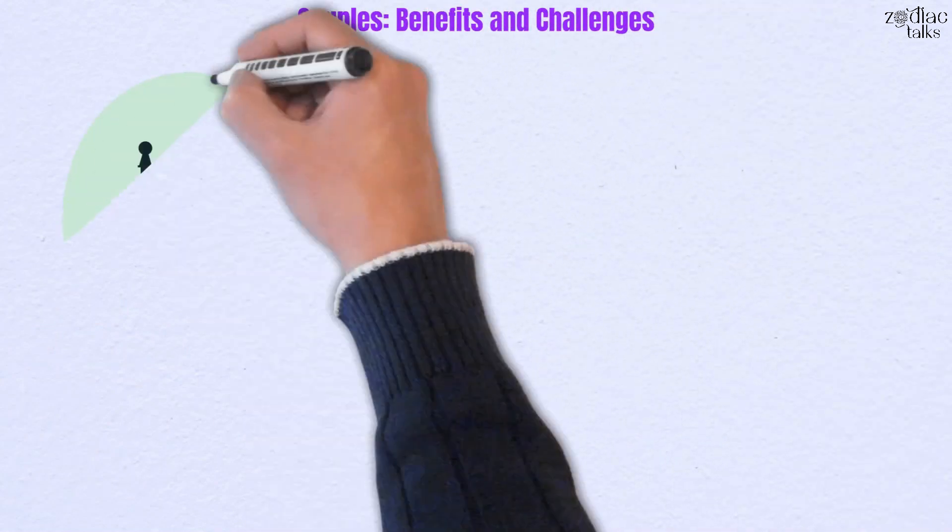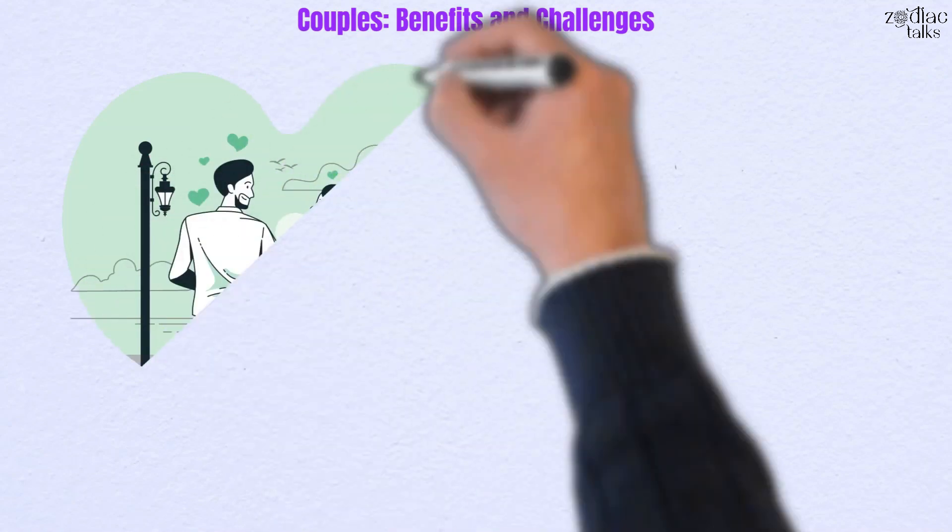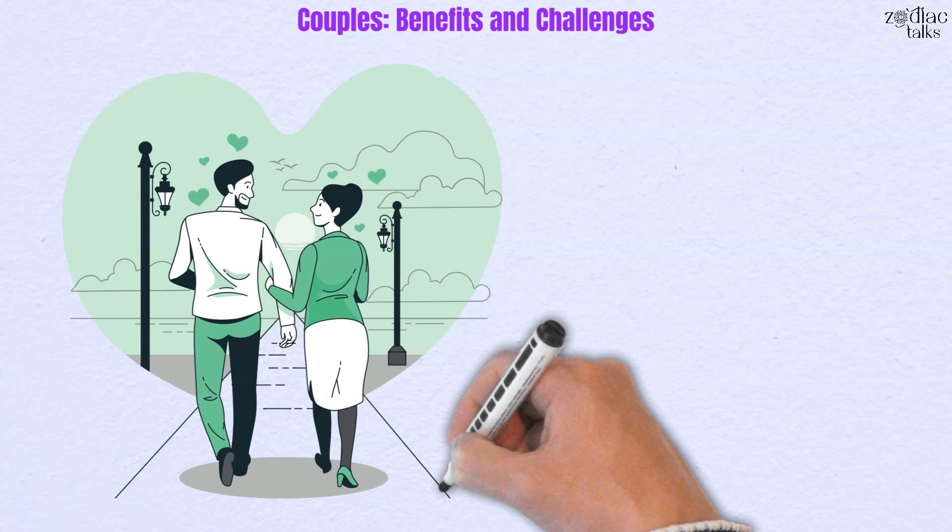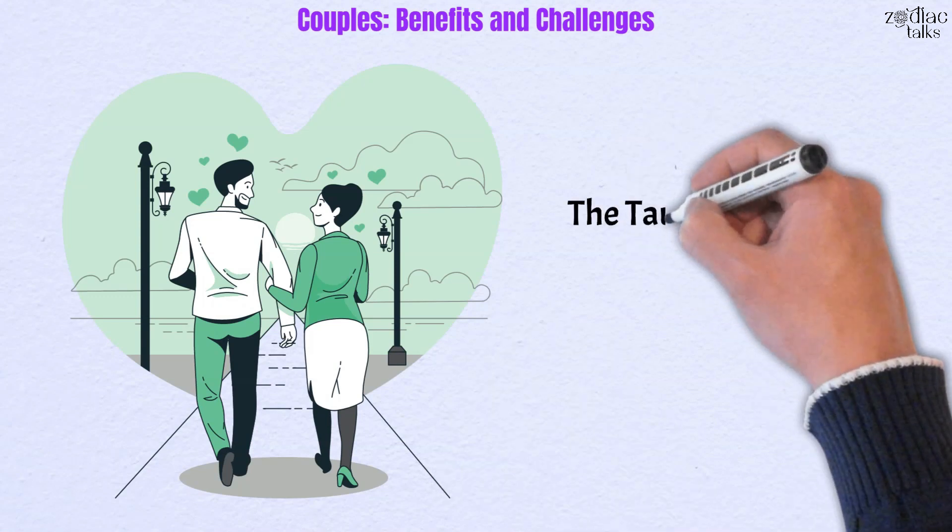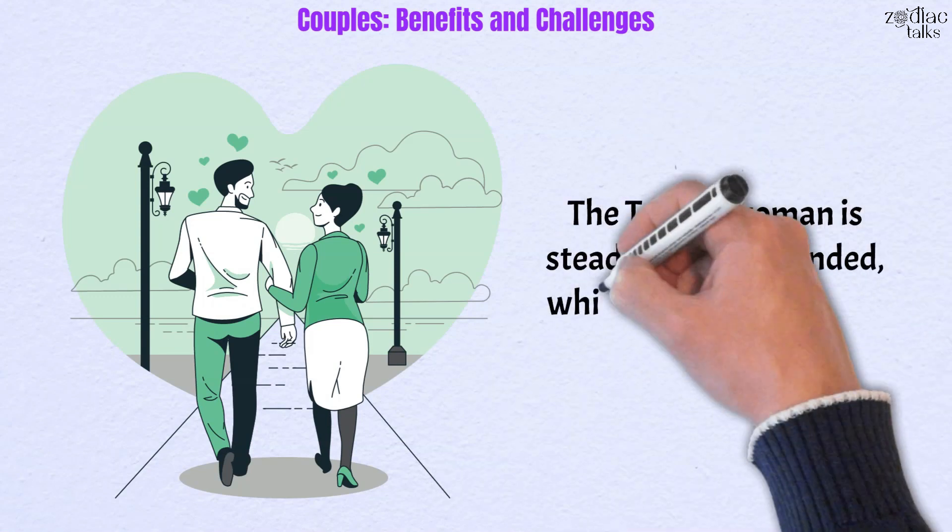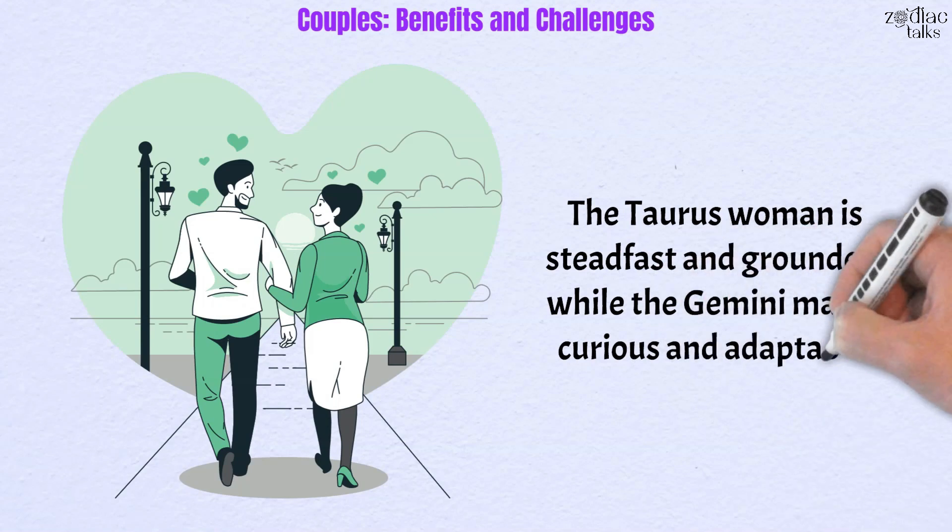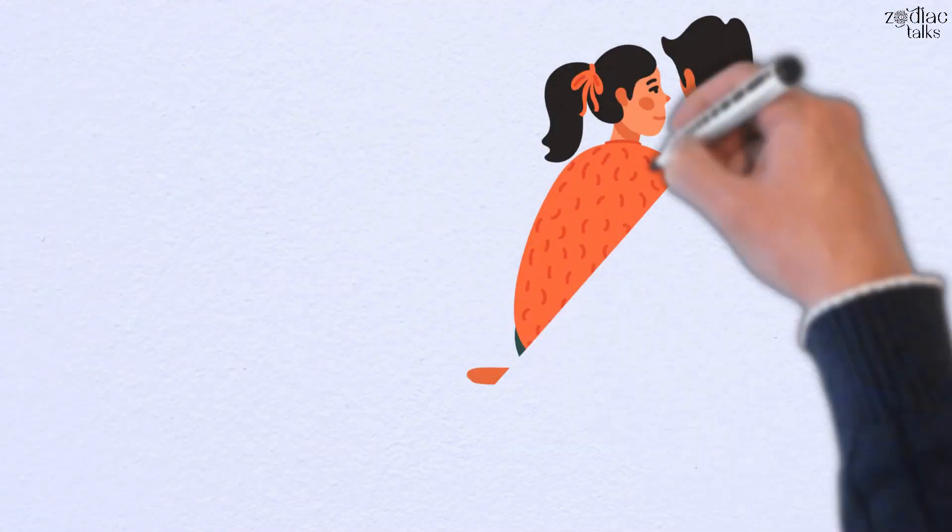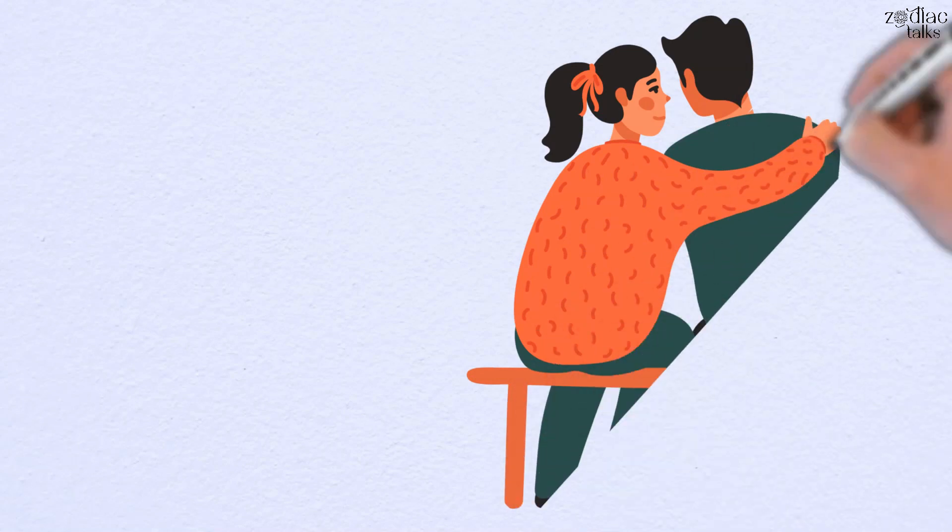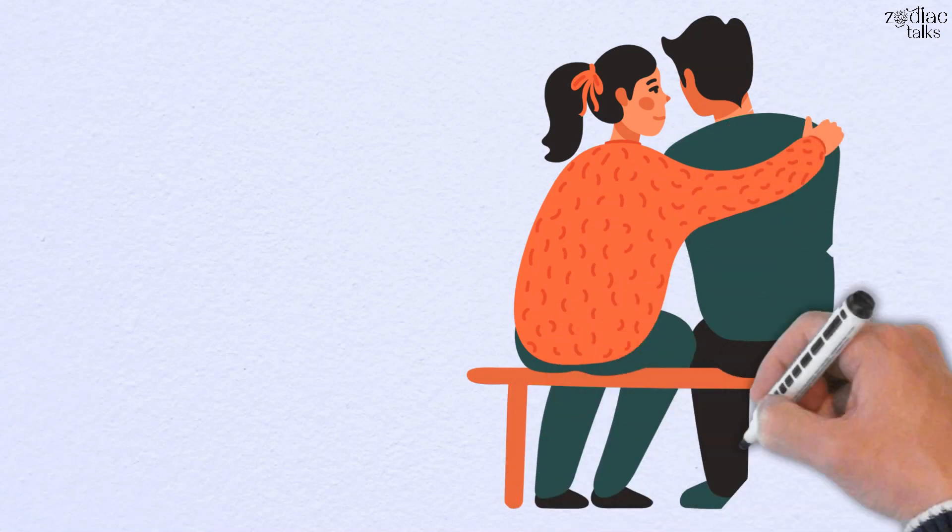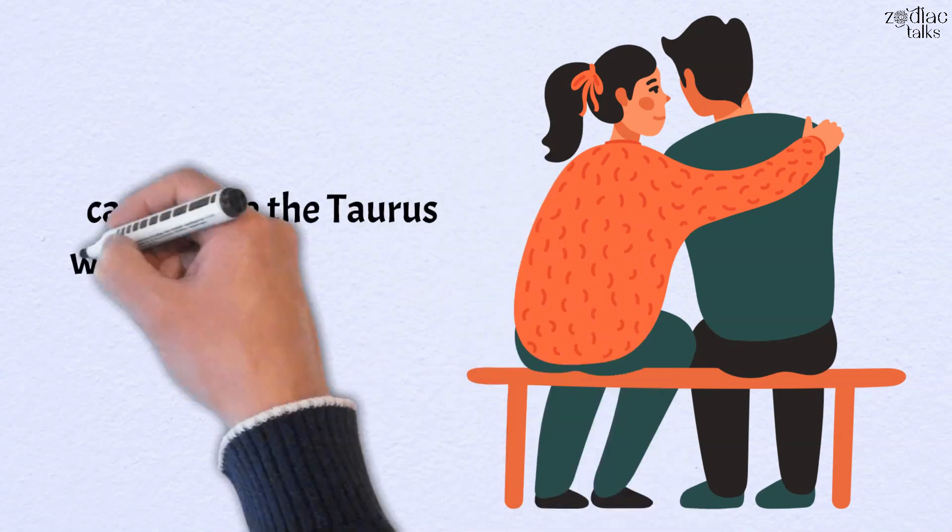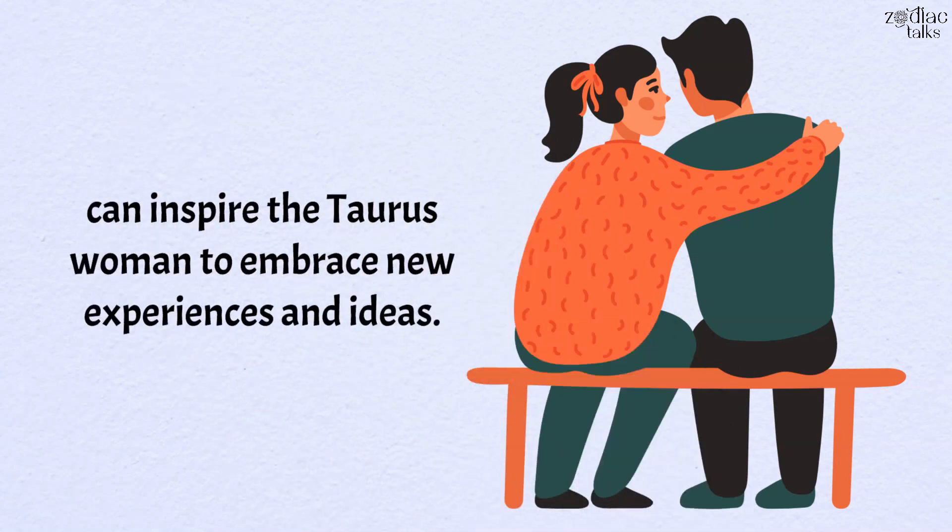Couples, Benefits and Challenges. The relationship between a Taurus Woman and a Gemini Man can be both rewarding and challenging, as they each bring unique qualities to the table. The Taurus Woman is steadfast and grounded, while the Gemini Man is curious and adaptable. One benefit of their partnership is the potential for mutual learning and growth. The Taurus Woman can offer stability and a sense of calm to the Gemini Man, while the Gemini Man can inspire the Taurus Woman to embrace new experiences and ideas.